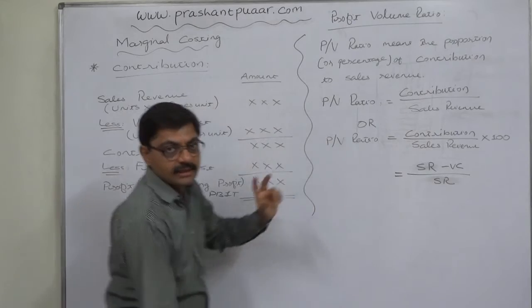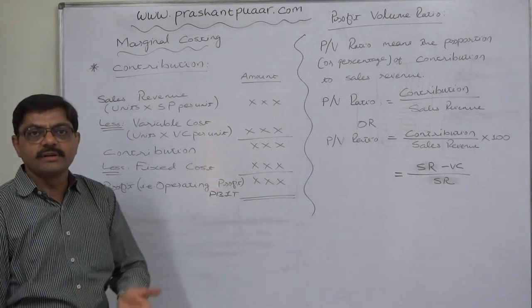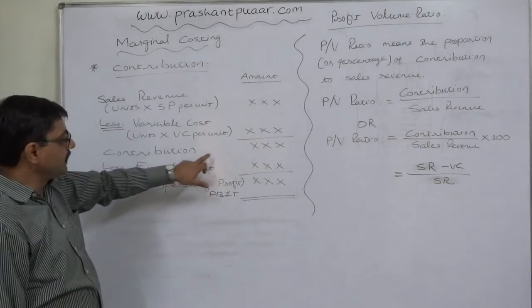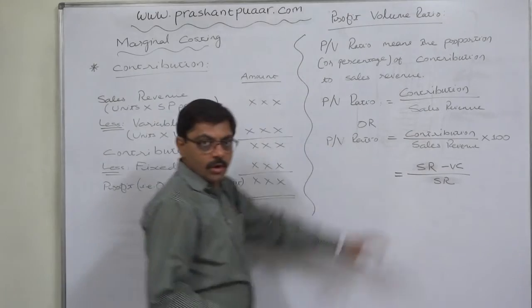Our PV ratio will increase. If due to any reason we have to decrease our selling price without any change in variable cost per unit, then our contribution will decrease and our PV ratio will decrease.